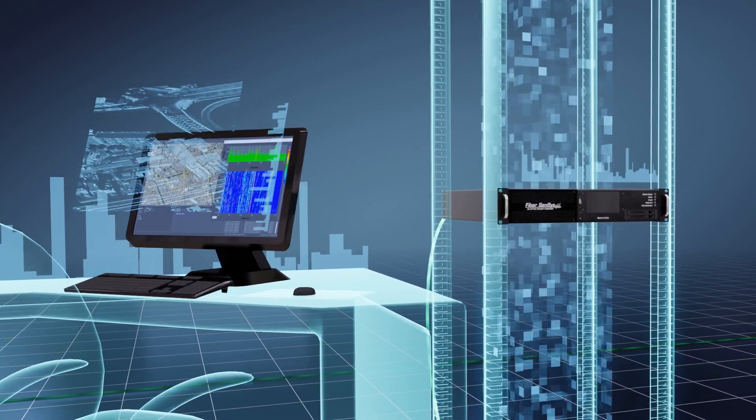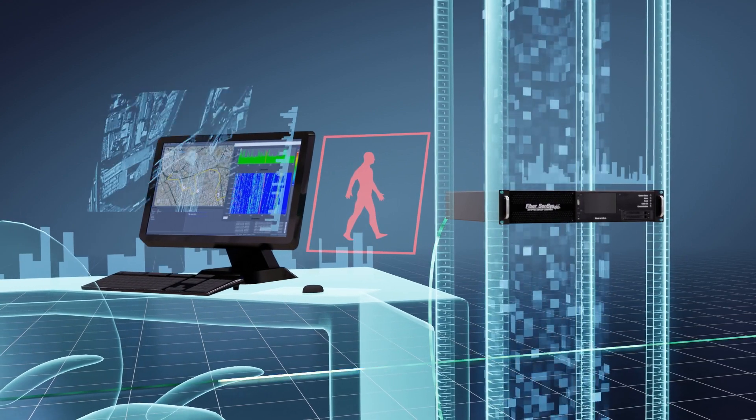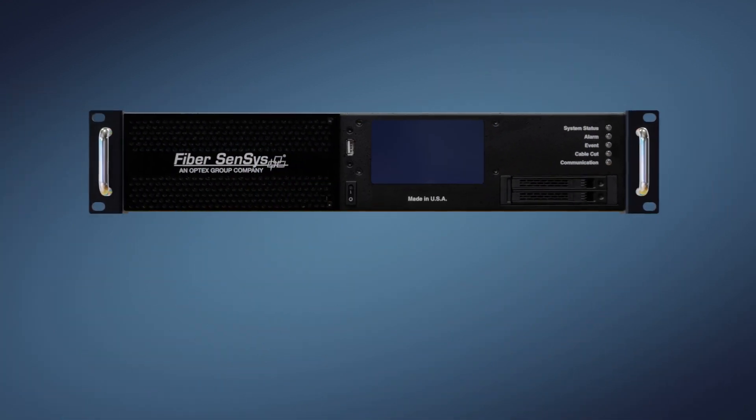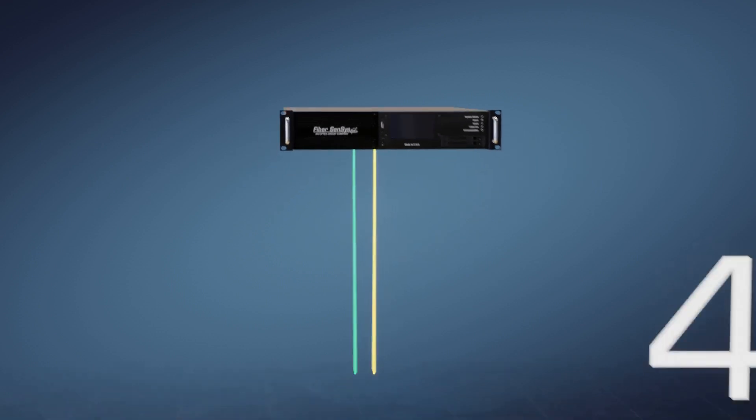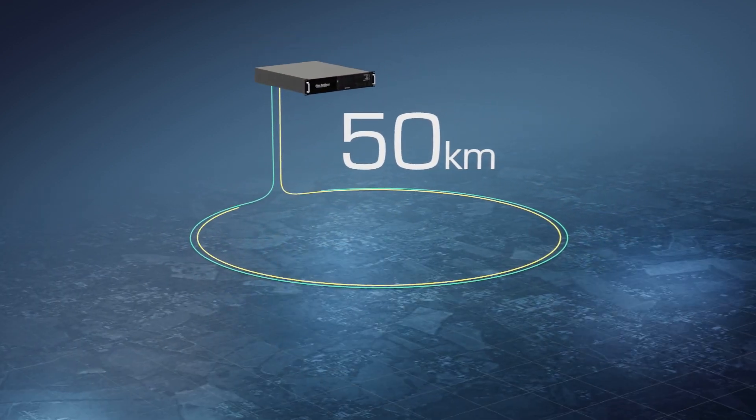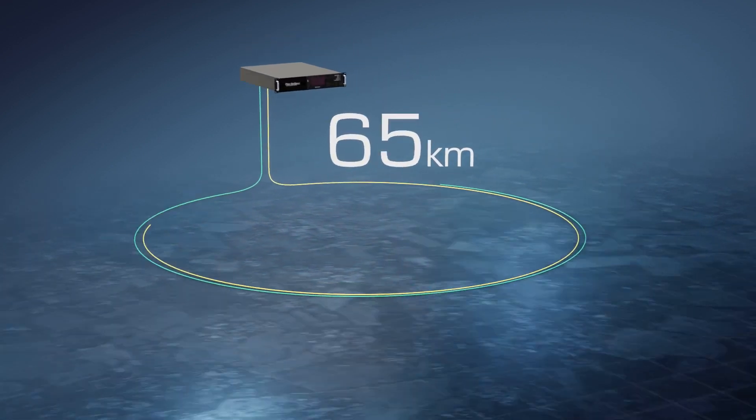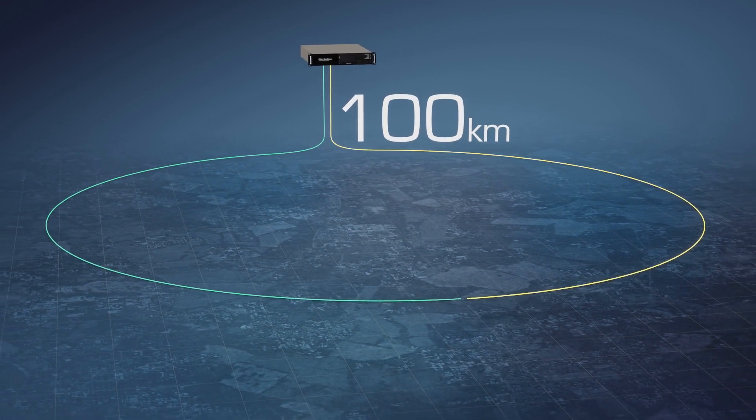An optional event classification feature can even determine the target type. A single EchoPoint processor can utilize two cables to cover up to 50 kilometers in a cut-tolerant loop or up to 100 kilometers if both cables are used independently.